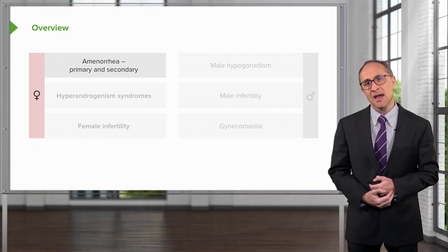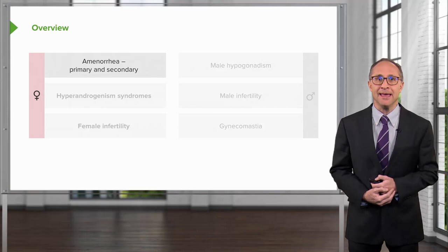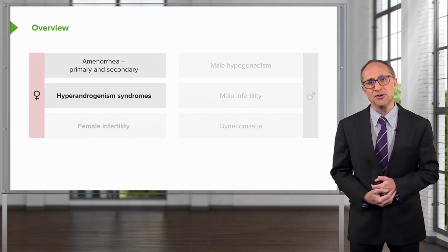On the female side, I'll start with amenorrhea, primary and secondary. Then we'll talk about hyperandrogenism syndromes, and then we'll complete that with female infertility.